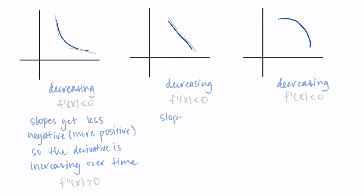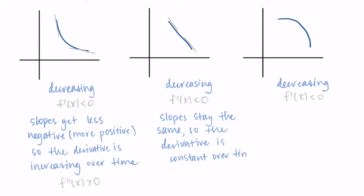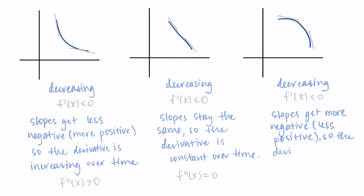On the middle decreasing graph, the slopes are staying the same — the derivative is constant over time, so the second derivative is equal to zero. Then on the rightmost function, the slopes are getting more negative. My first tangent line is sort of flat with a slope of maybe negative one, but as I move right, the slope gets steeper — maybe negative 10. The slopes are getting more negative, which is less positive, so the derivative is decreasing over time. Therefore the second derivative is negative — less than zero.